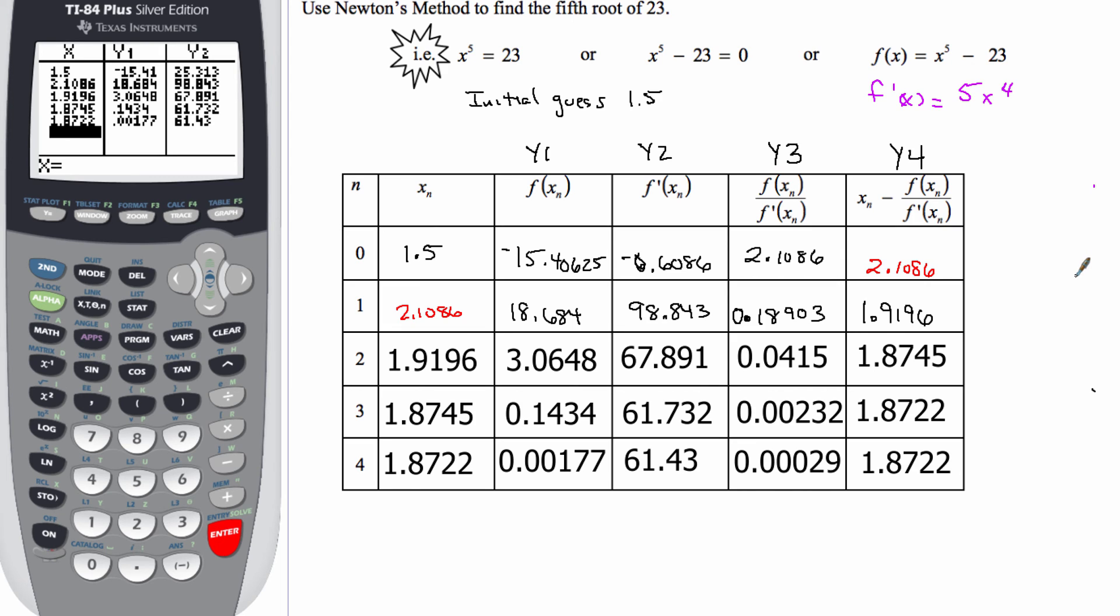Now hopefully, both of our charts look pretty similar. Now what I want you to pay attention to is in the third row, that very last value, 1.8722. When we use that to start off our initial guess in row 4, notice at the end of row 4, we get the same value. So that tells us we're done.